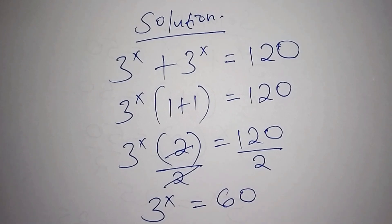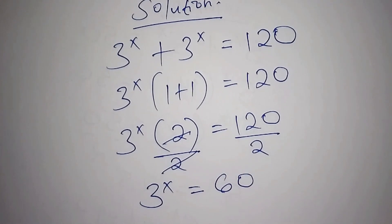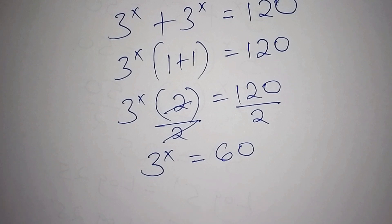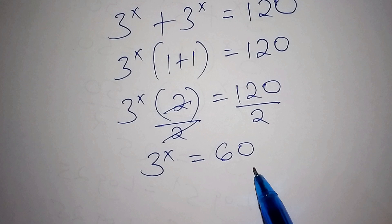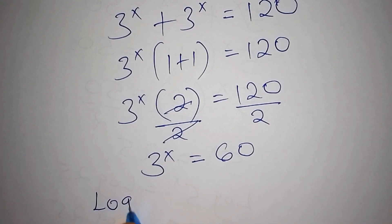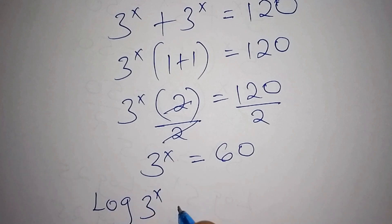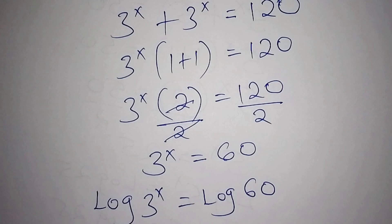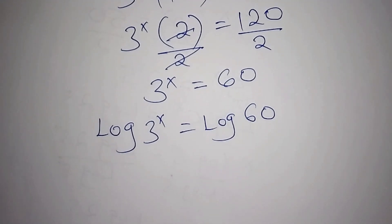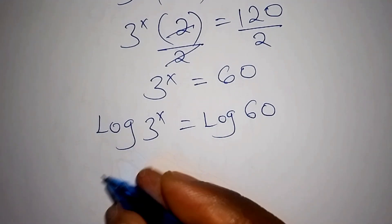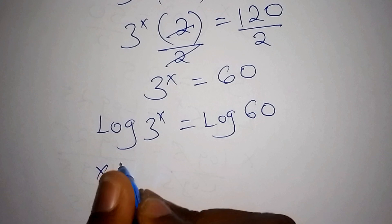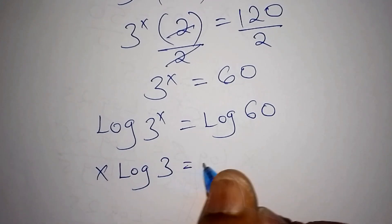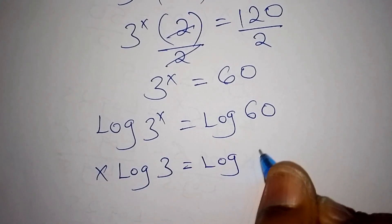Once we have 3 to the power of x equals 60, we cannot express 60 as a base and index directly, so we introduce the log. We take the log of both sides: log of 3 to the power of x equals log of 60. Using the power rule, this becomes x log 3 equals log 60.